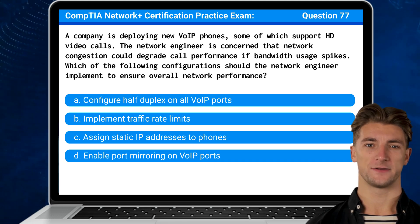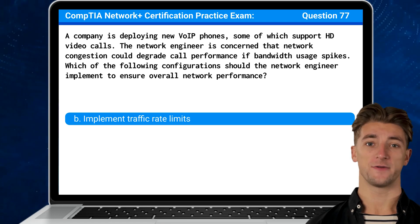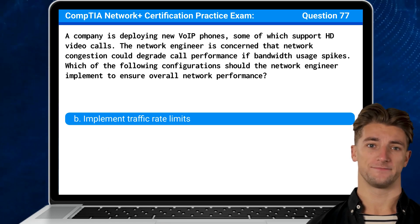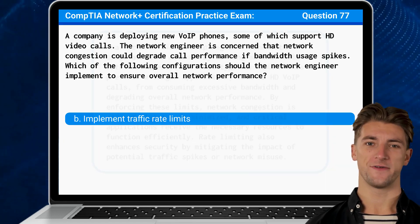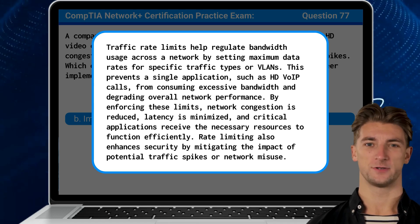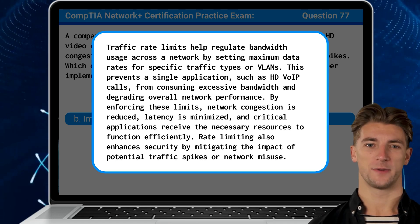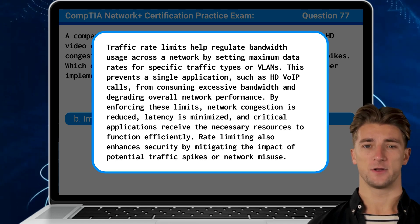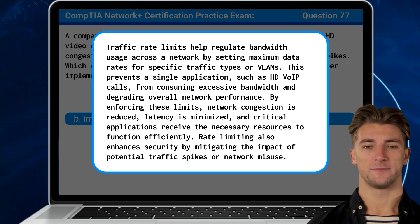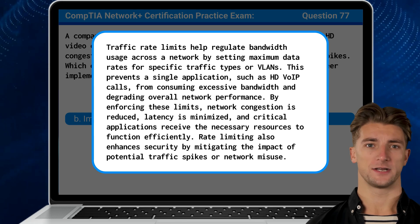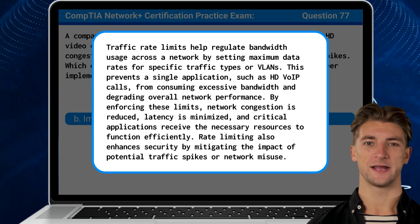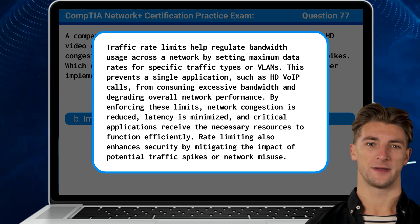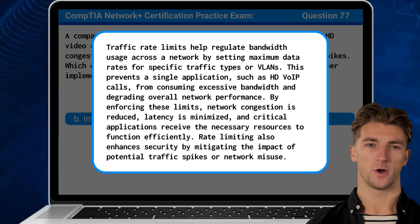The answer is B: Implement traffic rate limits. Traffic rate limits help regulate bandwidth usage across a network by setting maximum data rates for specific traffic types or VLANs. This prevents a single application, such as HD voice over IP calls, from consuming excessive bandwidth and degrading overall network performance.